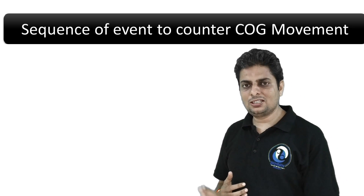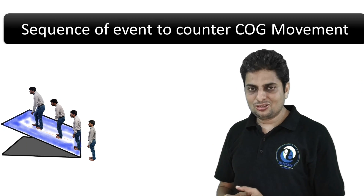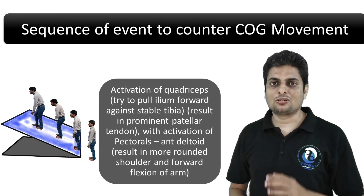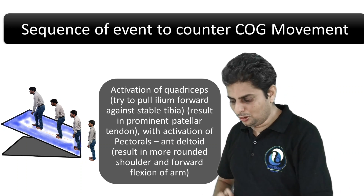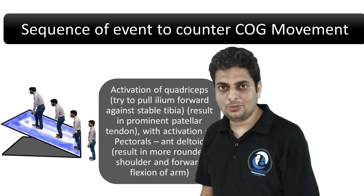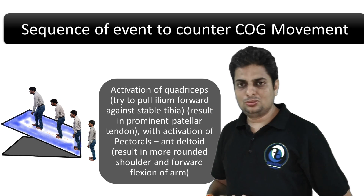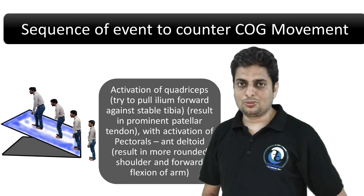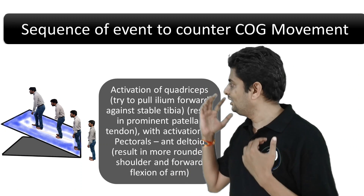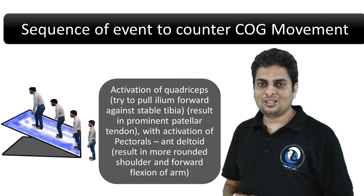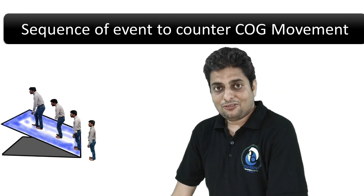If we further increase the level of inclination, the next step is activation of the quadriceps, making an attempt to pull the body forward — especially the femur and ilium over a stabilized tibia — to pull the COG within the base of support. Along with activation of the pectorals and deltoids, this provides a presentation of rounded shoulder with a flexed arm.